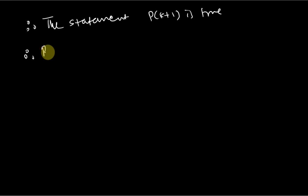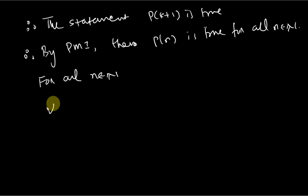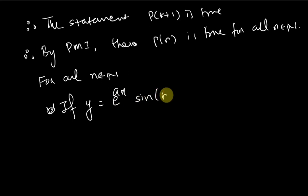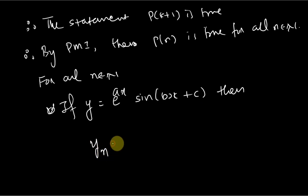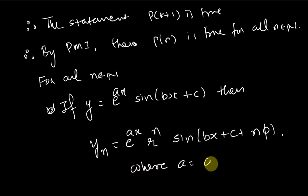Therefore, by PMI, the statement P(n) is true for all n belonging to the natural numbers. So for all natural numbers, if y = e^(ax) sin(bx + c), then y_n = r^n · e^(ax) · sin(bx + c + nφ), where a = r cos φ and b = r sin φ.